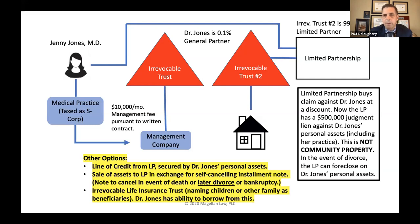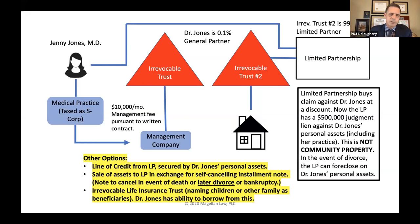Another option would be an irrevocable life insurance trust, where the life insurance is not owned by you. The original purpose years ago was when the estate tax exclusion was a lot lower, so people would put life insurance into a trust to keep it outside of their estate. The same type of structure can be used today even if you don't need it for estate tax reasons — because it's not in your name, it's not going to be subject to a later divorce or anything like that.